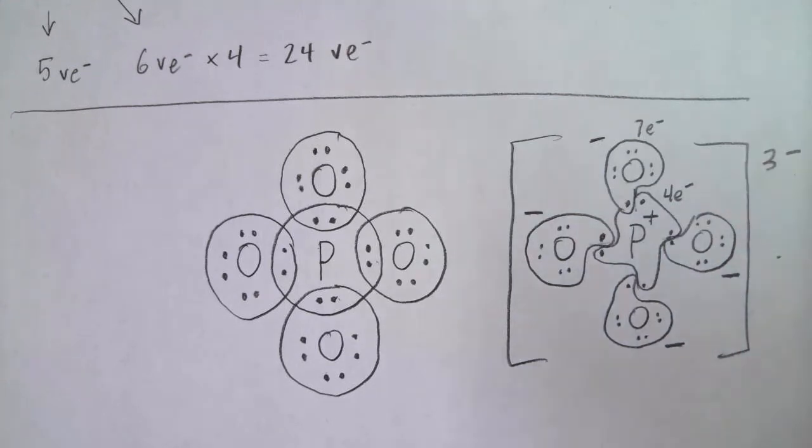However, we have a situation where phosphorus can have an expanded octet. It is in the third period of the periodic table, it has an unoccupied 3d sublevel. And so there's a possibility that we can make the formal charges a bit more favorable than what we see here. And the most favorable set of formal charges would be as many atoms as possible with a formal charge of zero.